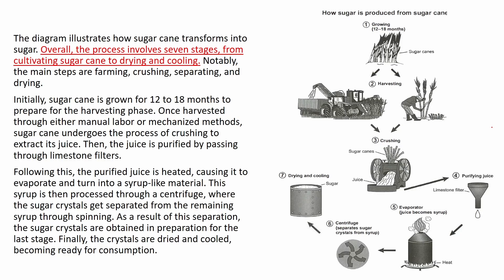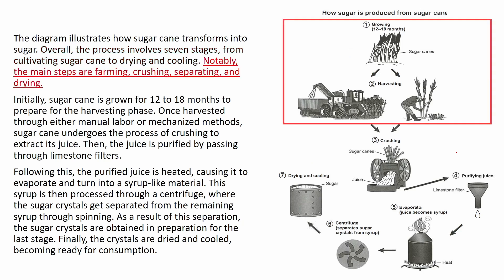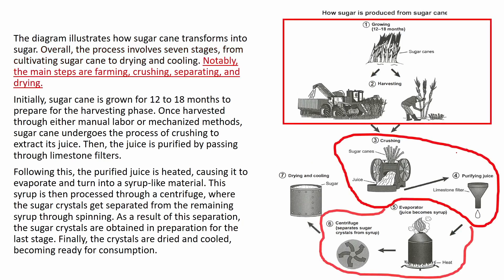This is the model answer. After the paraphrase, here is the overview: 'Overall, the process involves seven stages from cultivating sugarcane to drying and cooling.' I mentioned the number of steps, the start point, and then the end point. Then I mention those main stages: 'Notably, the main steps are farming, crushing, separating, and drying.'